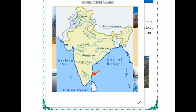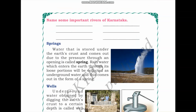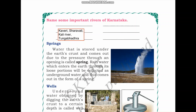The next exercise asks you to name some important rivers of Karnataka. We can name Kaveri, Sharavati, Kali River, Tungabhadra, and other rivers. Think about some other rivers you can name and list them.